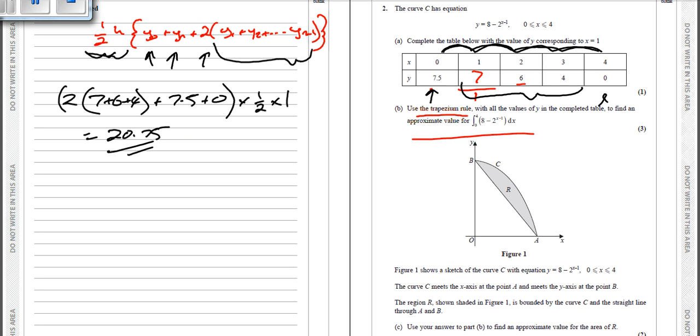So if we have a look down the bottom then, it says curve 1 shows a sketch with this. The curve meets the X axis at point A and the Y axis at point B. The region R, shown in the shaded figure one, is bounded by the curve C and the straight line through A and B. Use your answer to part B to find the approximate value for the area of R. So what we've done here, what this 20.75 is, now this last part is the understanding thing. We've forgot about this line here. So the first part of the question was working out the total area here underneath the curve.